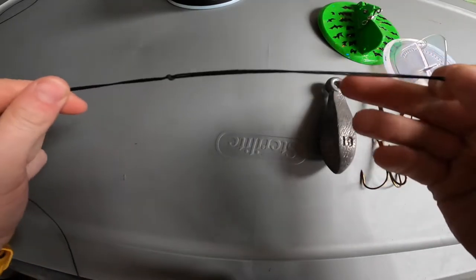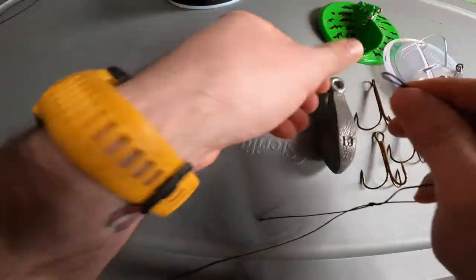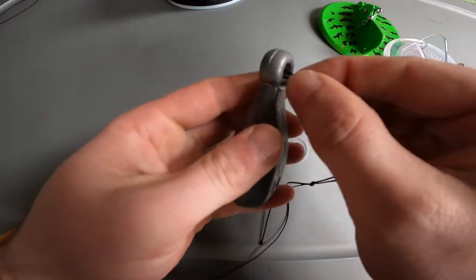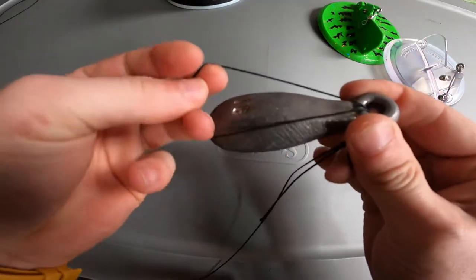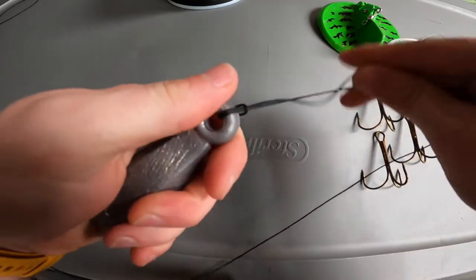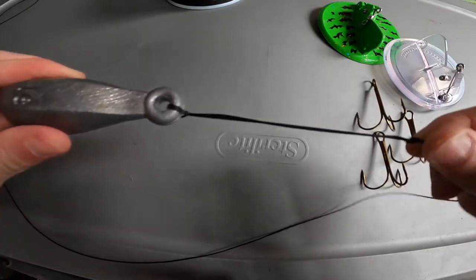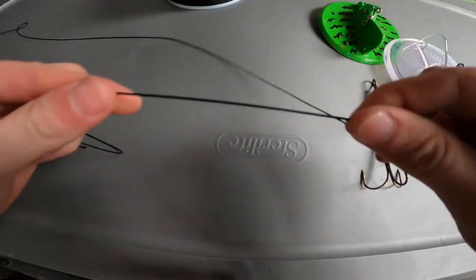To attach the weight, you just go through the eye, put that loop down around, and then cinch up. That weight is then secured.